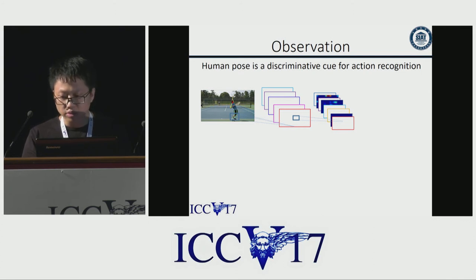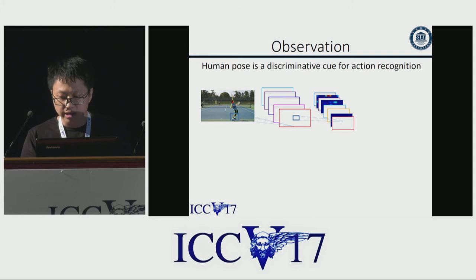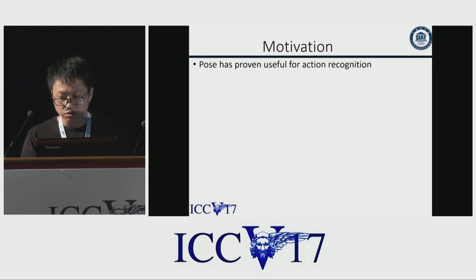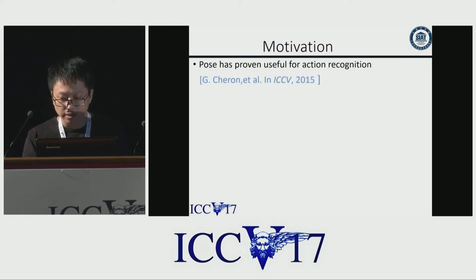As we all know, human pose is closely related to human action. We observed that different joints of human pose can be highly activated in certain feature maps. This implies that human pose is a discriminative cue for action recognition, and the evolution of human pose can provide important cues for the task.